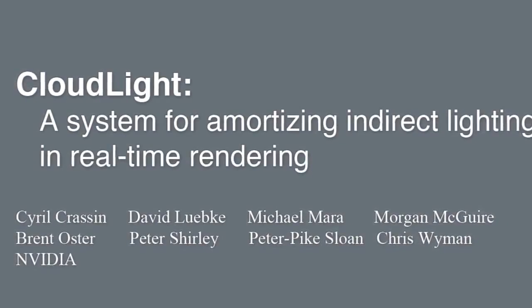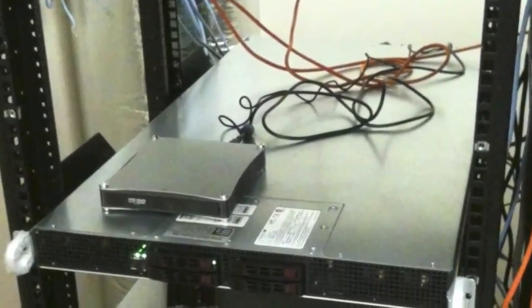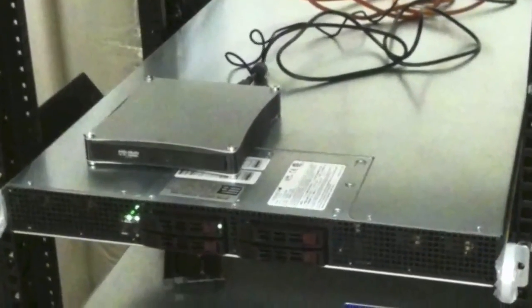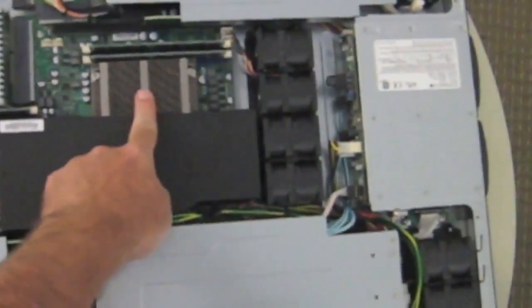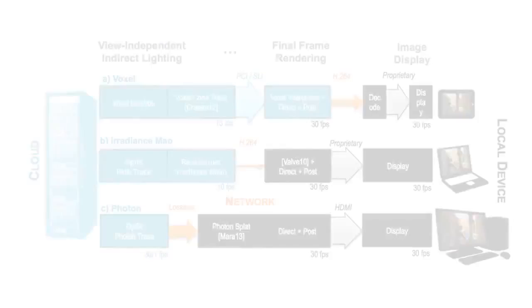CloudLite is a distributed system for real-time interactive graphics that computes indirect illumination in the cloud. Our ideal cloud hardware target is a GPU-enabled rack-mounted server, such as this NVIDIA GeForce Grid unit. Inside each grid unit, you can see the dark squares of the two Intel CPUs and the silver rectangles of the three multi-GPU slots. We also extend our cloud with a GeForce Titan in a tower case because it is not yet available in a rack-mounted form factor.